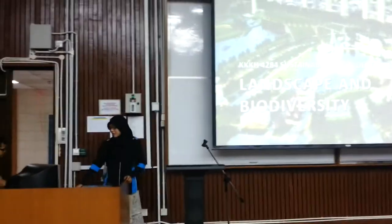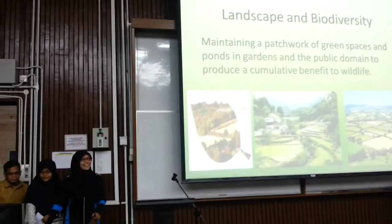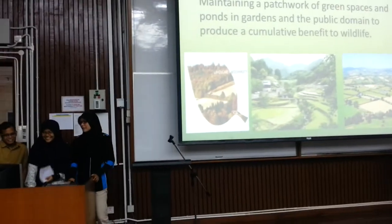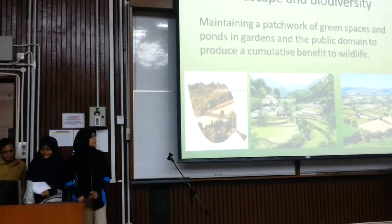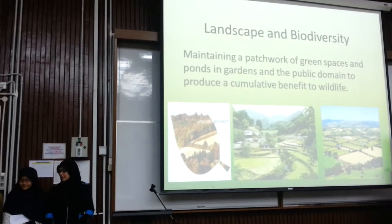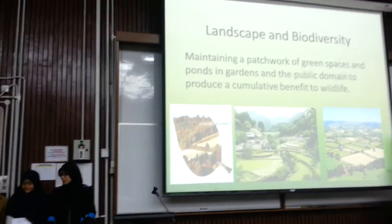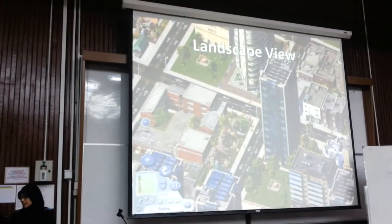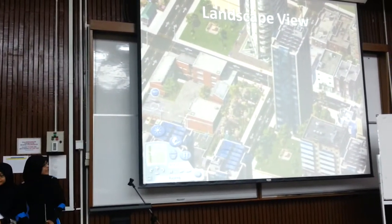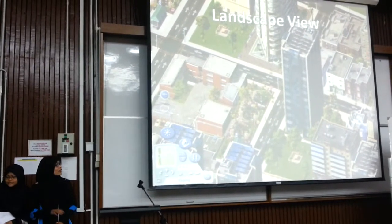The next topic is landscape and biodiversity. For landscape and biodiversity, it is about maintaining a network of green spaces and green corridors in gardens and parking areas to produce community benefits and support wildlife. This is the landscape view of our city — there are parks located at every corner of the city.